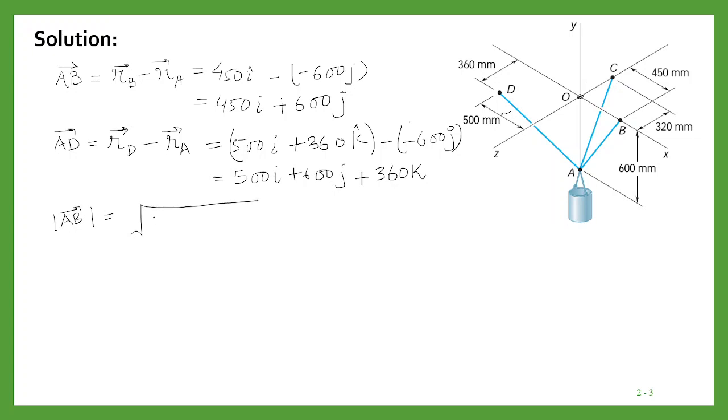Now we need to calculate the magnitude of these vectors. So the magnitude of AB will be equal to the square root of 450 squared plus 600 squared, and that will be equal to 750 mm.